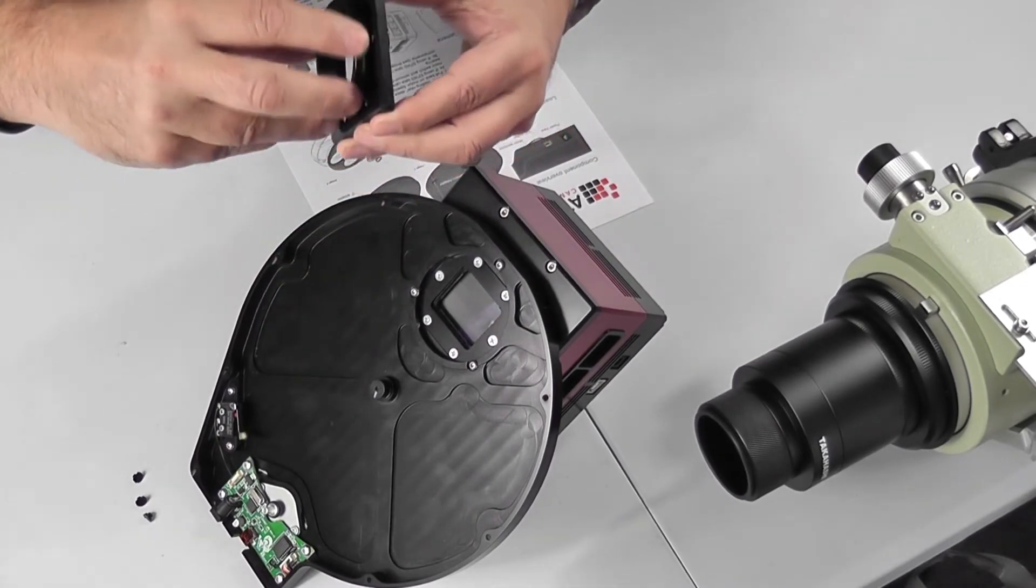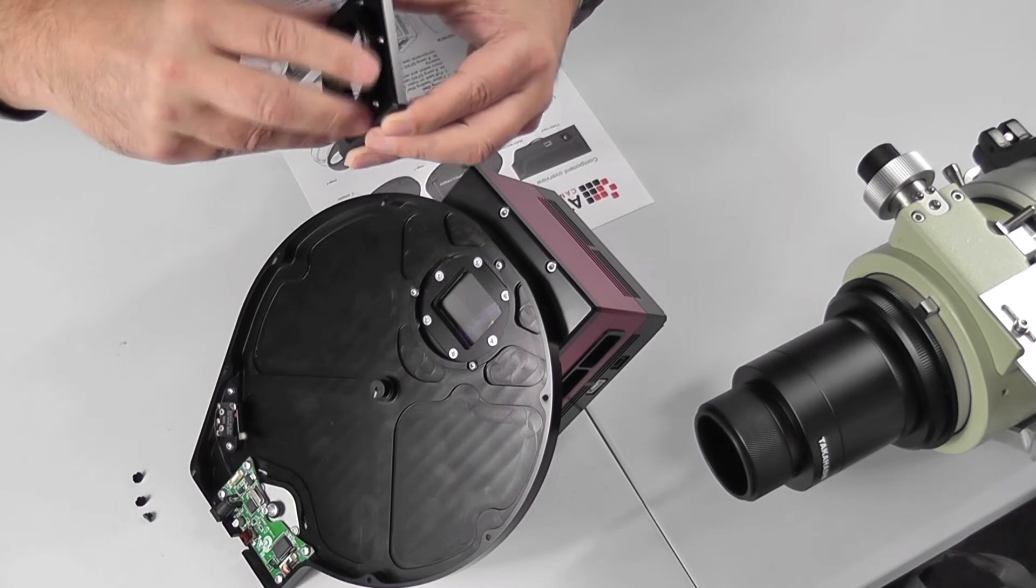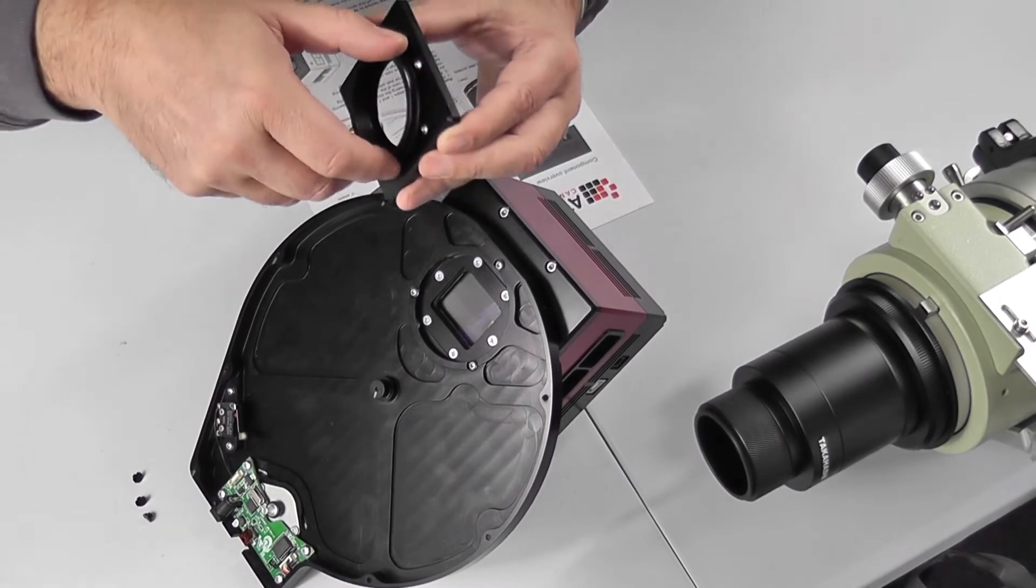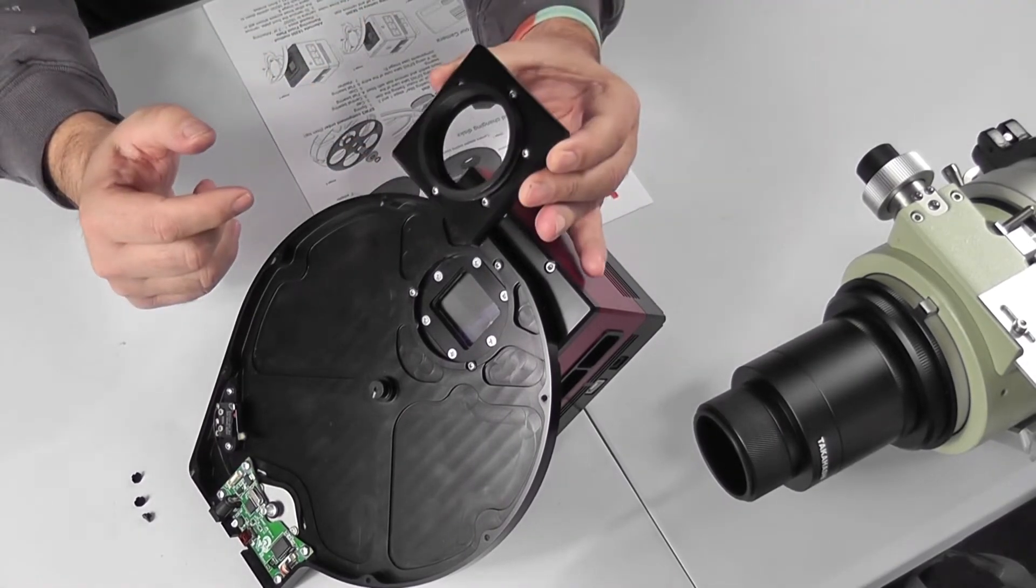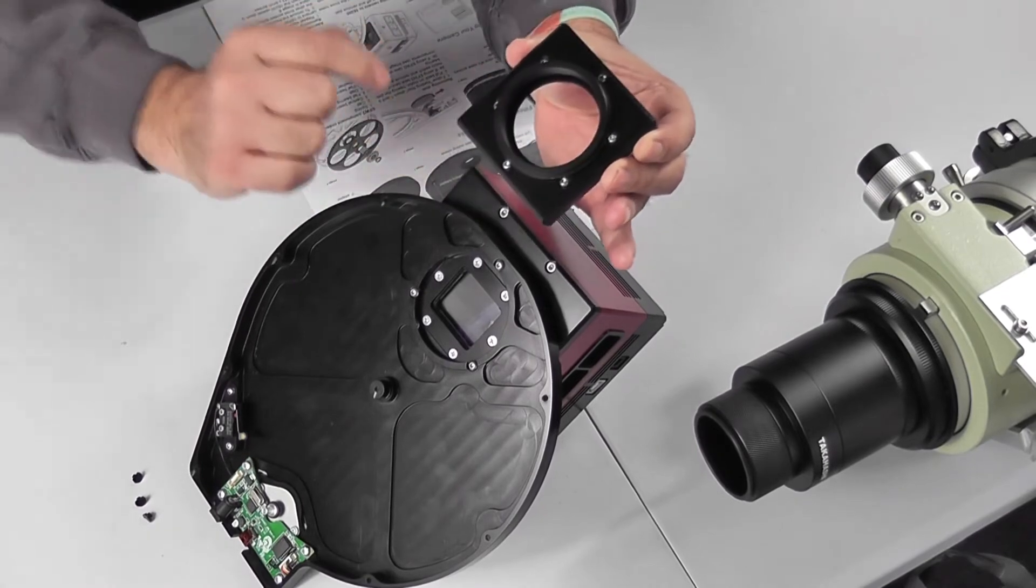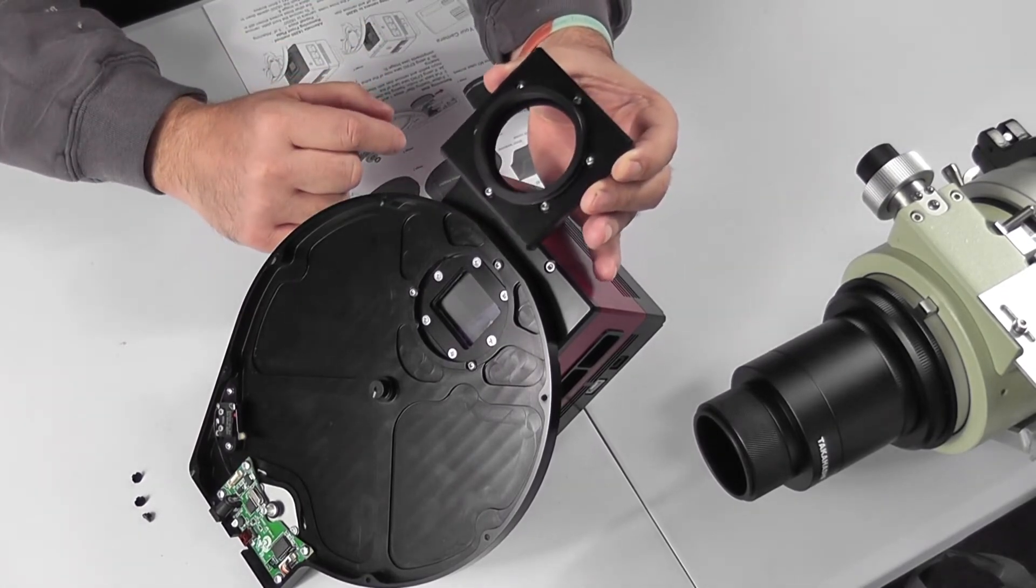The standard adapter screws into this plate still fixed to the camera. That just screws into the front of the plate and then into the back of the filter wheel and is done up with the little grub screws.